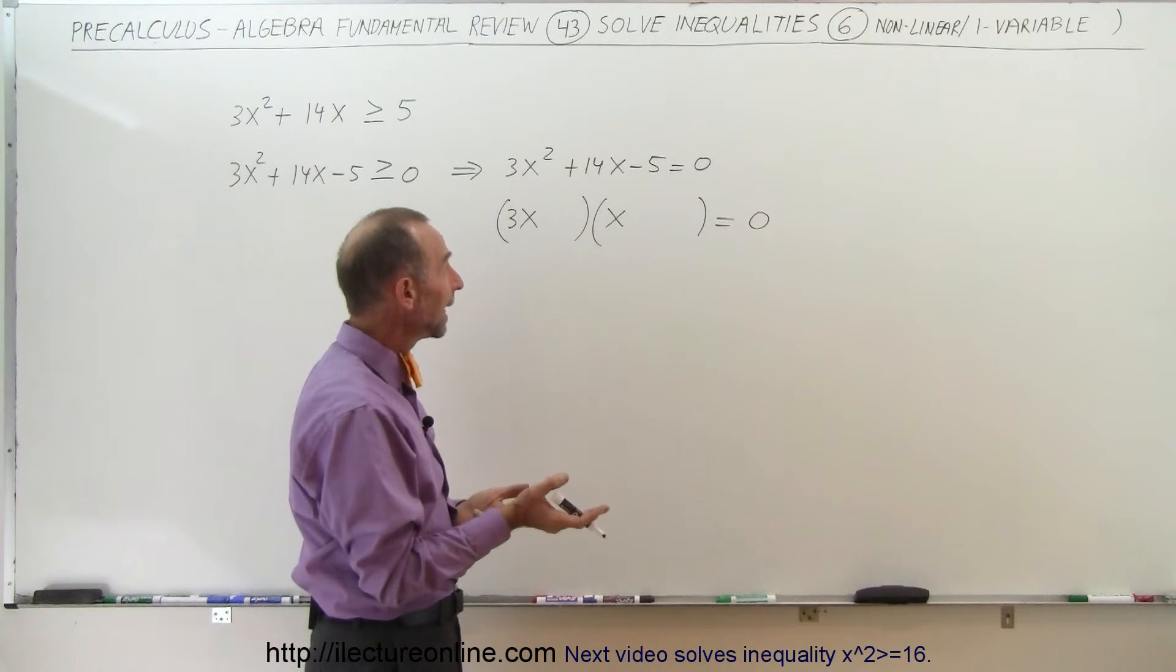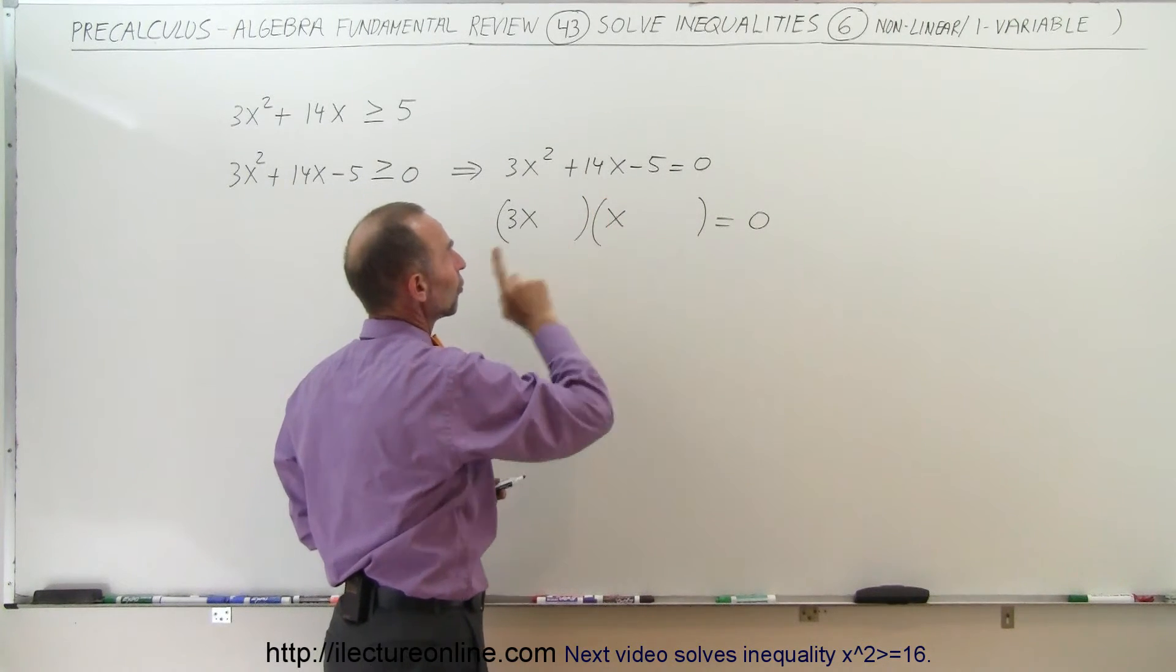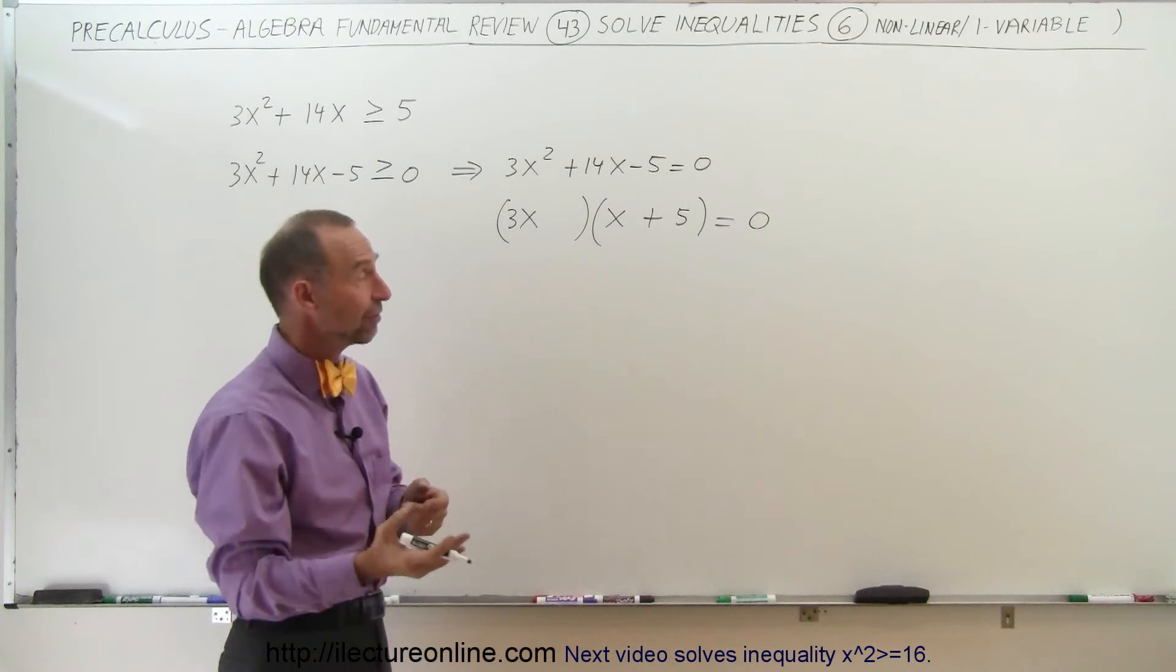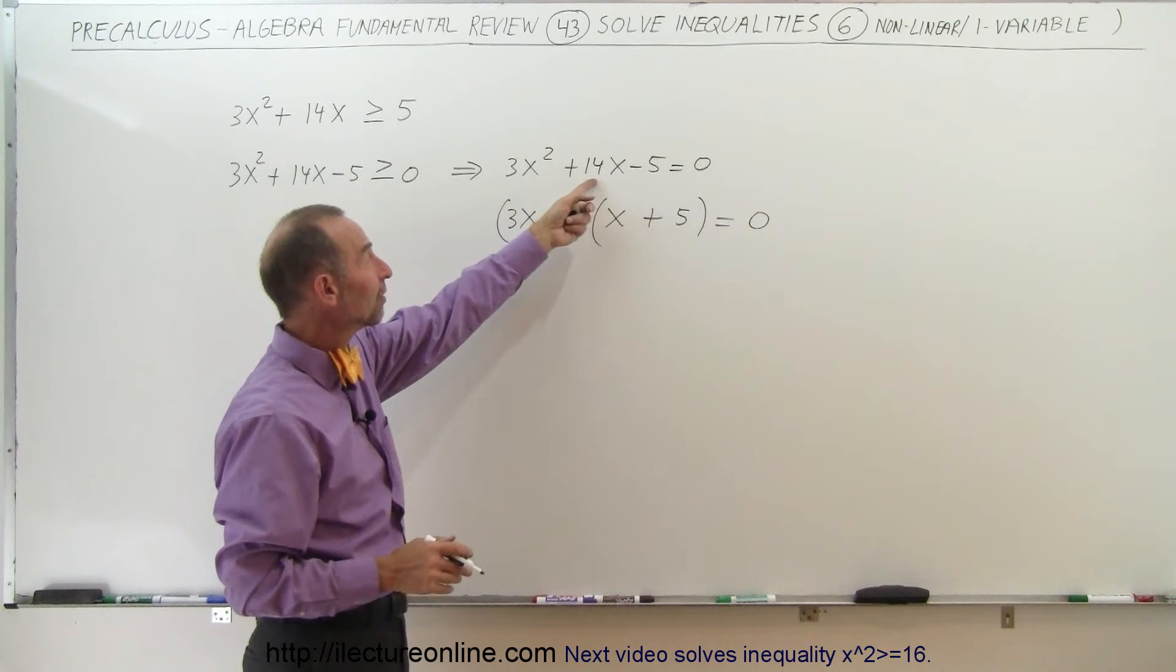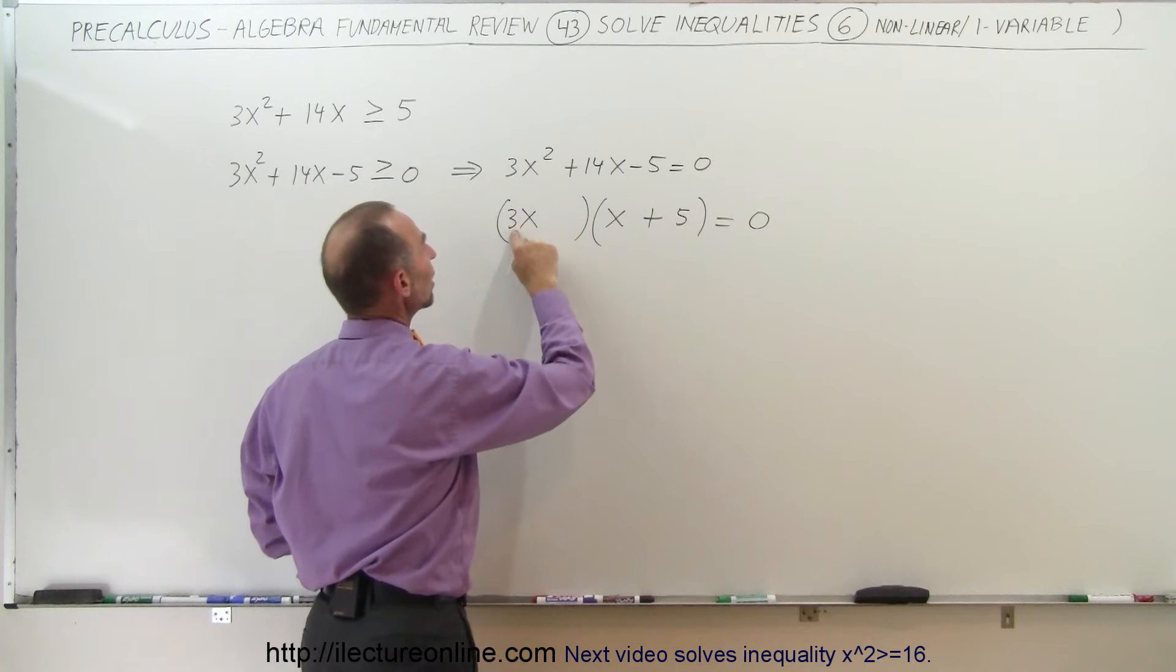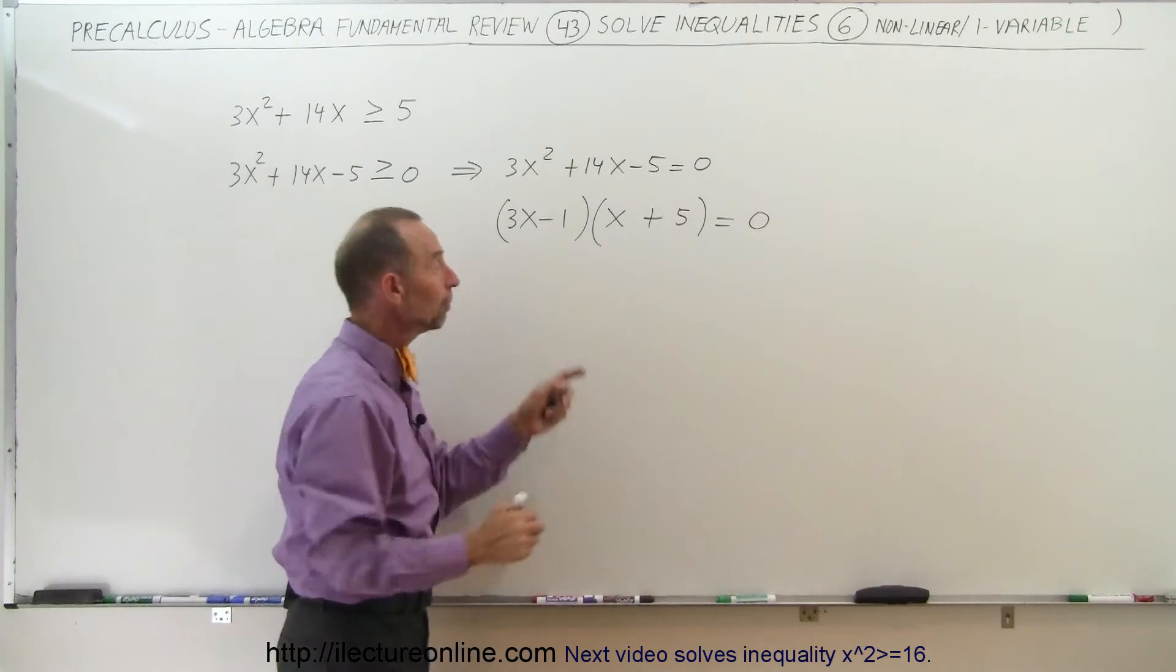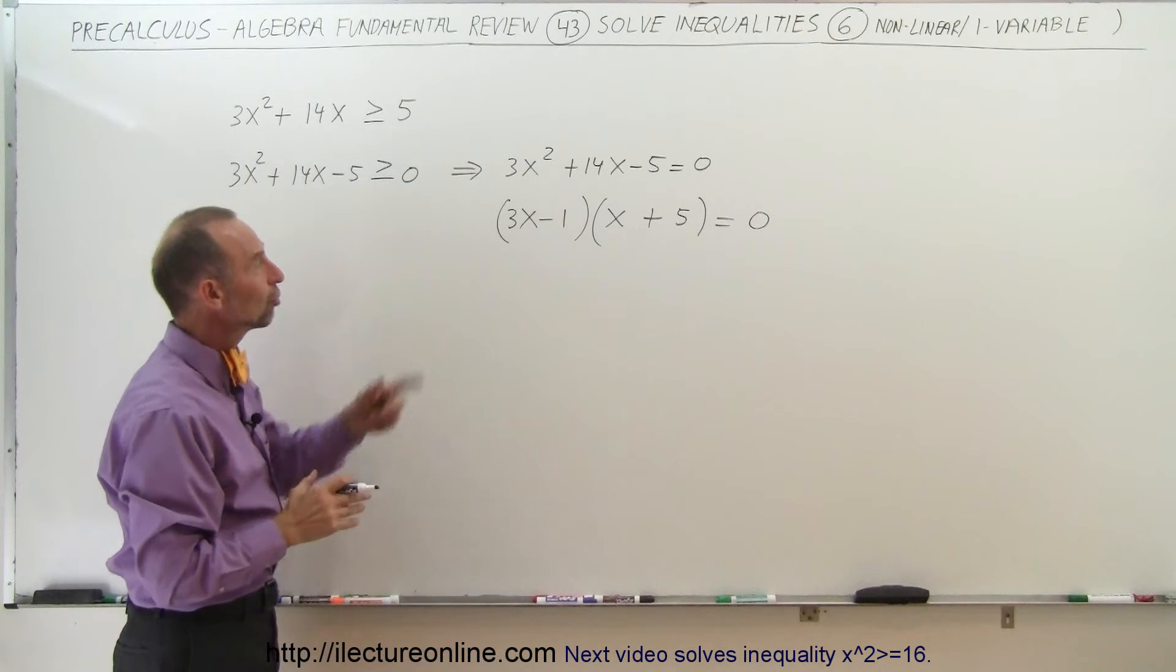The last two numbers multiplied together will give us negative 5. That means we need a positive number and a negative number. Also notice we have a large middle term. I believe if we put a positive 5 there, because the two numbers that give us negative 5 are negative 1 and positive 5, or negative 5 and positive 1. Since we have such a big positive middle term, I think a positive 5 will do it, because 5 times 3 gives us 15, and if we put negative 1 there, negative 1 times x is minus 1, 15 minus 1 is 14, gives us the middle term, and these two numbers together give us negative 5. So that's the correct solution for this equation.